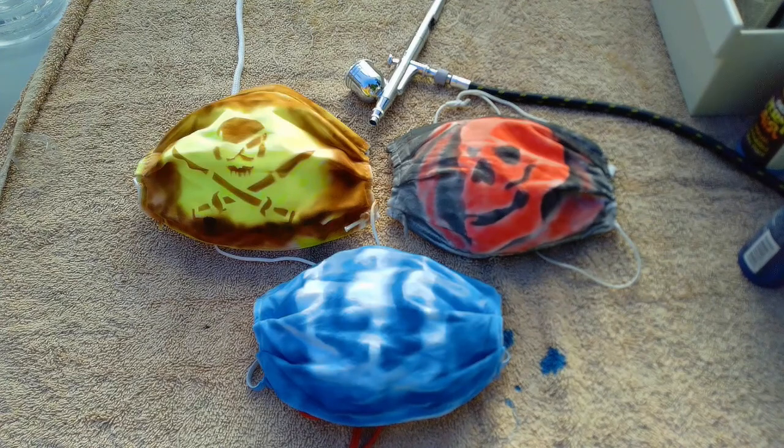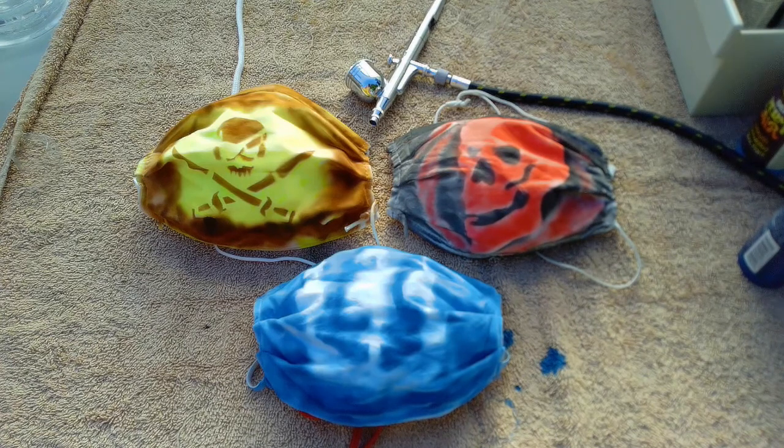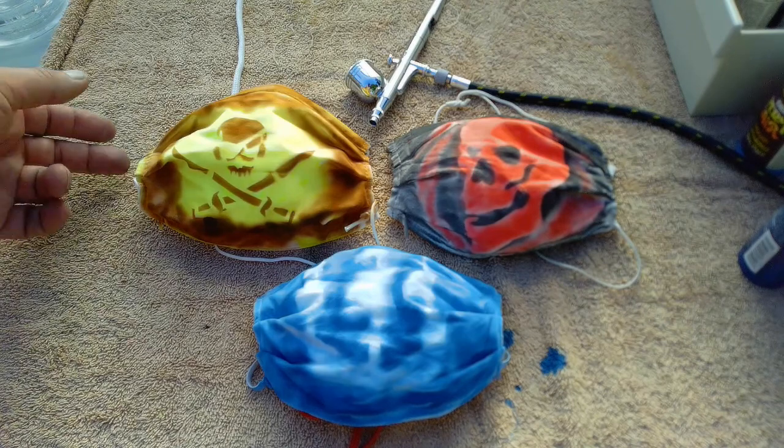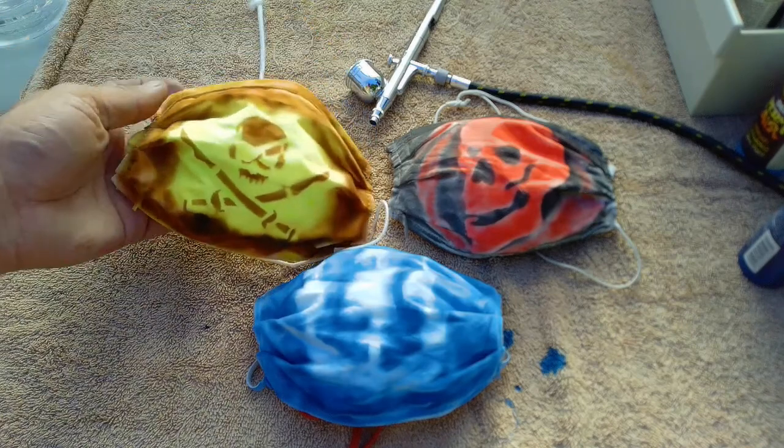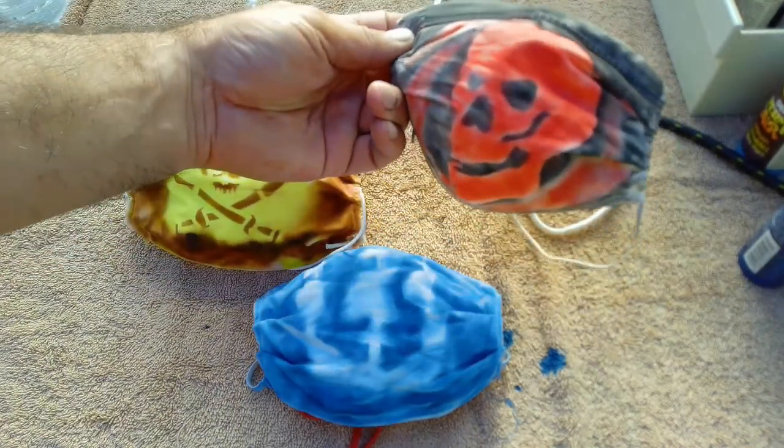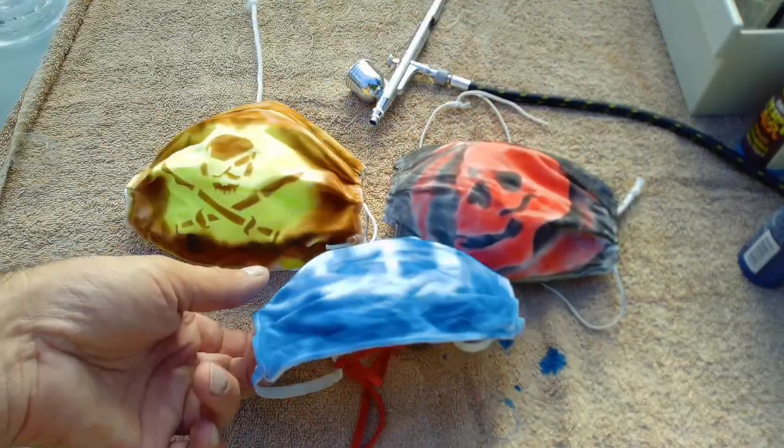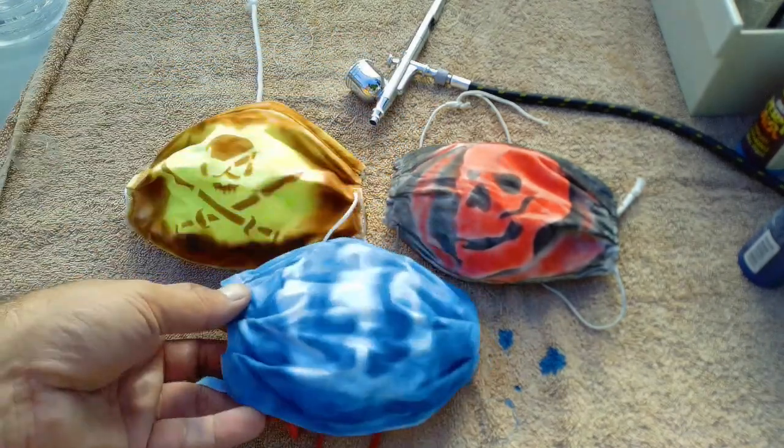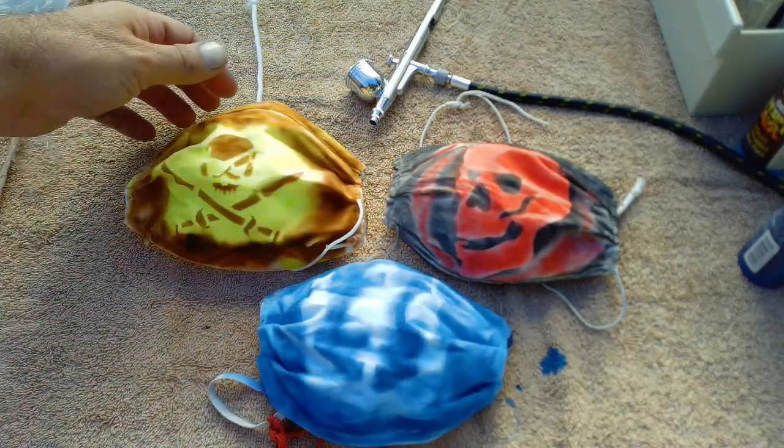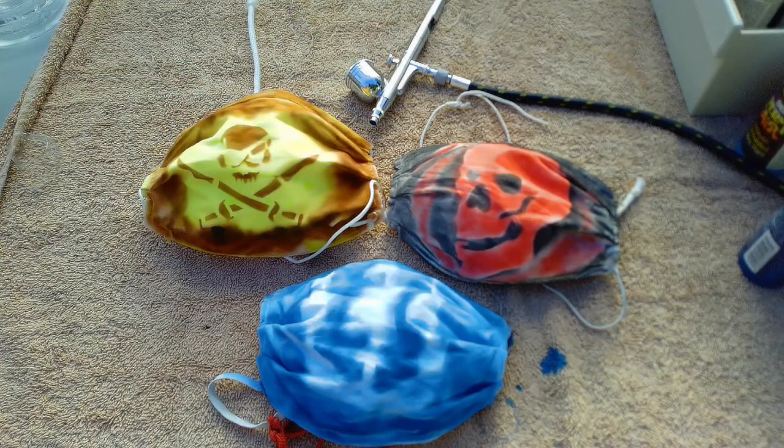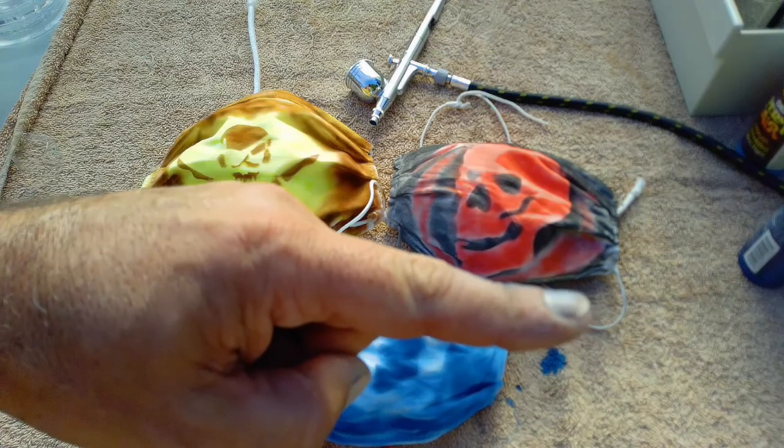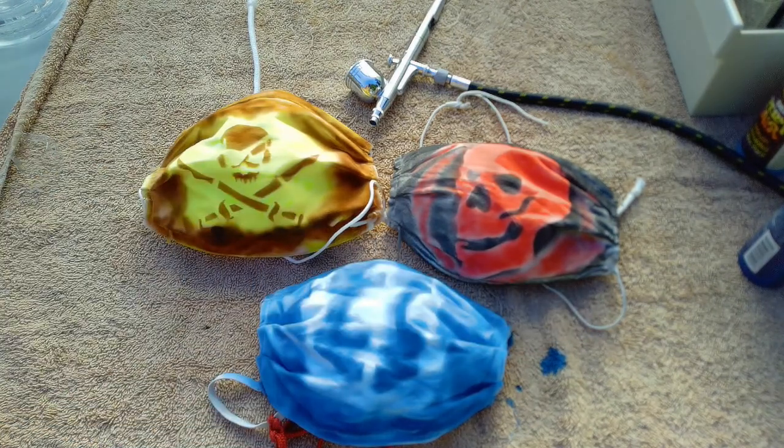OK I got all three of them done. I have to throw them in the dryer in order to have the paint set in them, then I'm going to wash them, throw them in the dryer again to make sure they set good. I have my brown skull and cross swords, I have my red skull, and I have my blue ghost boat. Let me know which one in the comments below you like the best. I hope you enjoyed the video - if you did give it a big thumbs up, push the subscribe button. Thanks for watching and have a great day.